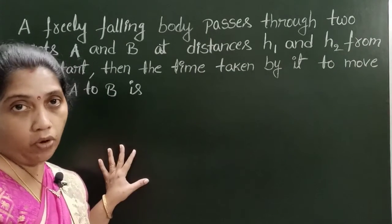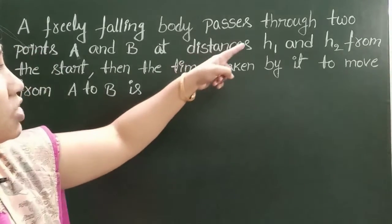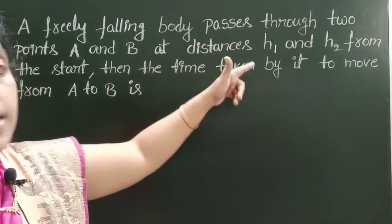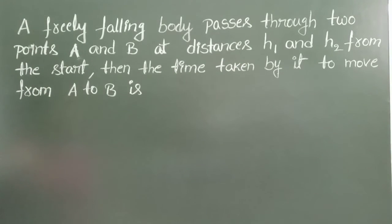A freely falling body passes through two points A and B at distances H1 and H2 from the start. Then the time taken by it to move from A to B.